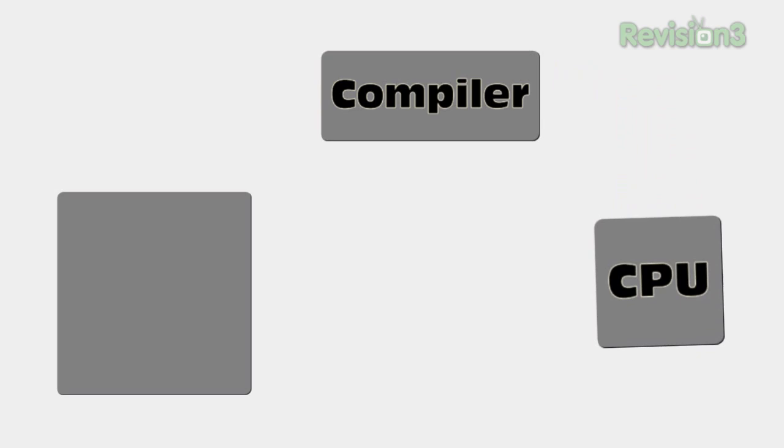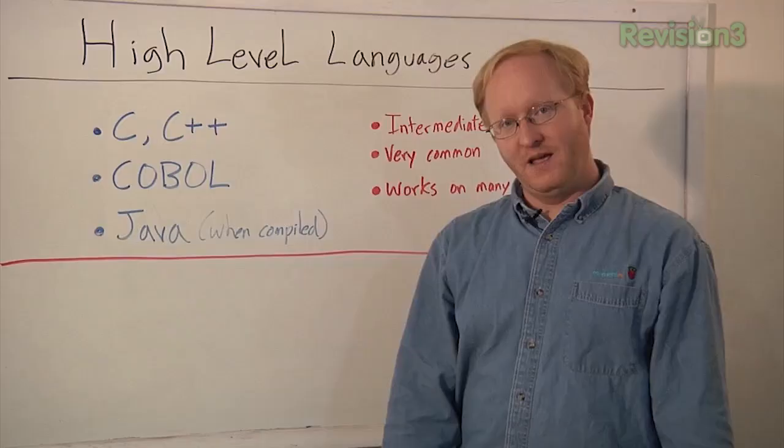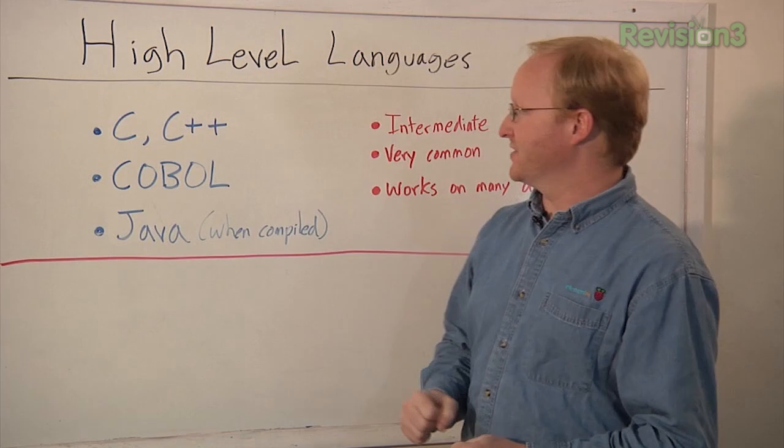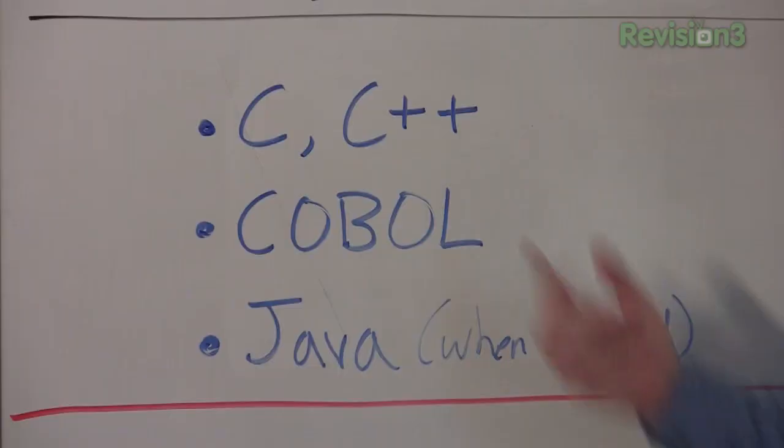The next type of languages we're going to talk about are high-level languages. These are languages that are written out of conversational form. However, they're compiled into bytecode to run on your computer. Examples include C and C++, two of the most popular languages there are today. COBOL, good old school COBOL, still around.